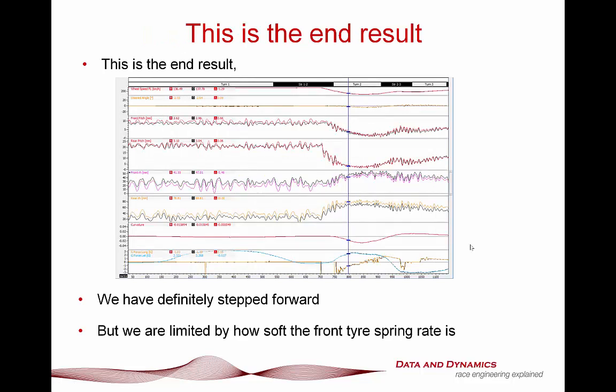Let's take a look at the end result. The baseline is coloured and the updated damper result is in black. Taking a look at our front and rear pitches — our average front and rear damper positions — we have some pretty considerable improvement in the behaviour of the platform. With the ride heights, we've had a step up but not a massive step up. That all goes back to how soft the front tyre spring rate was — only 220 newtons per millimetre. While we have certainly moved things forward, it's not quite the night-and-day difference you'd expect.